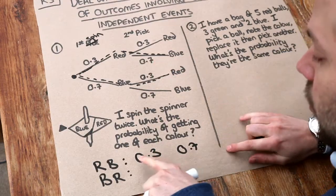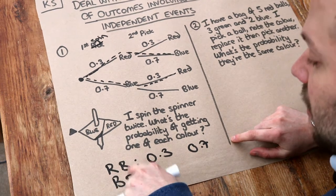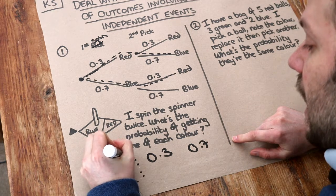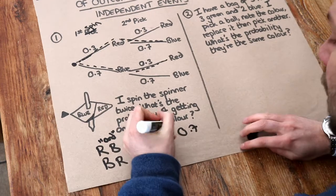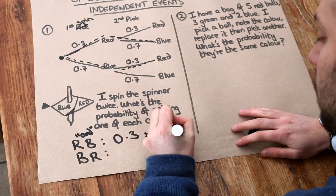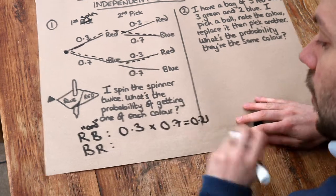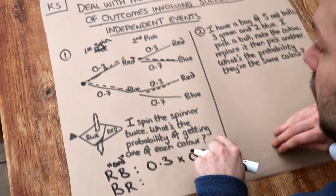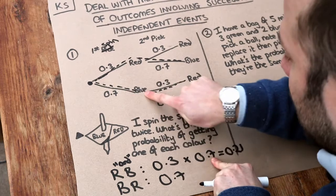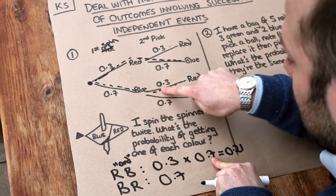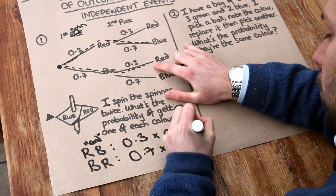What do you do with these two probabilities? It's the probability of the first being red and the second being blue. In probability, the word 'and' means we multiply together — so we do 0.3 times 0.7, which gives 0.21. What about getting blue then red? The probability of getting blue first is 0.7, and then the probability of getting red after that is 0.3. We multiply them together and get 0.21.